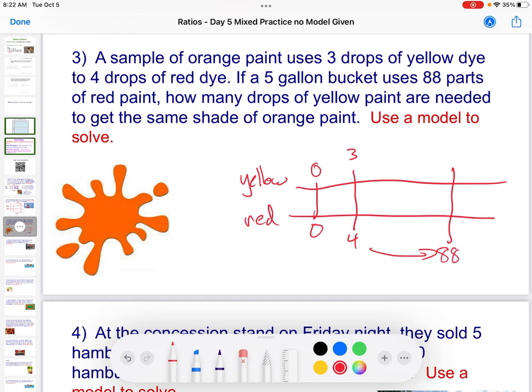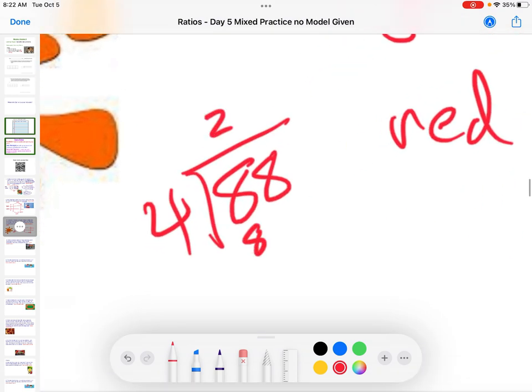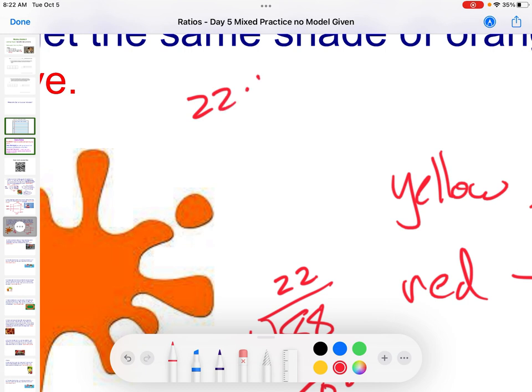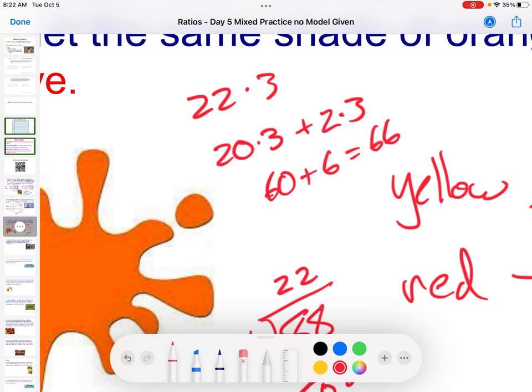88 divided by 4. How many 4s going to 8? 2. I'll subtract. 8 minus 8 is 0. Drop an 8 down. How many 4s going to 8? Another 2. I multiply by 22. So, I'm going to multiply by 22. 22 times 3. 22 times 3 is the same as 20 times 3 plus 3 times 3. 20 times 3 is 60. 2 times 3. That's 6 for a total of 66. 66 yellow. 66 drops. Make sure we answer the question.